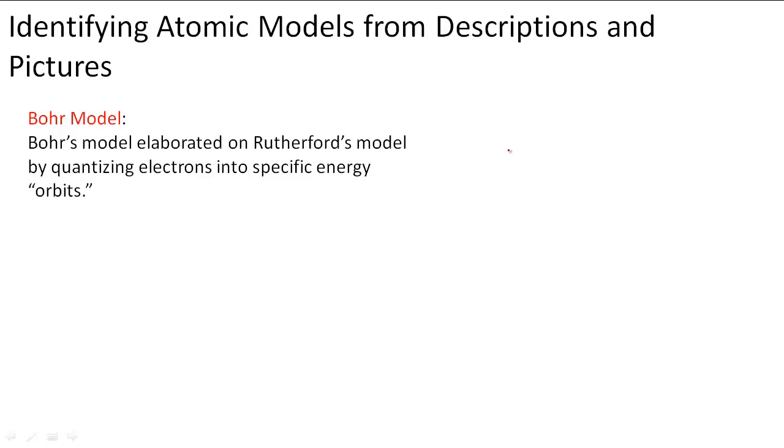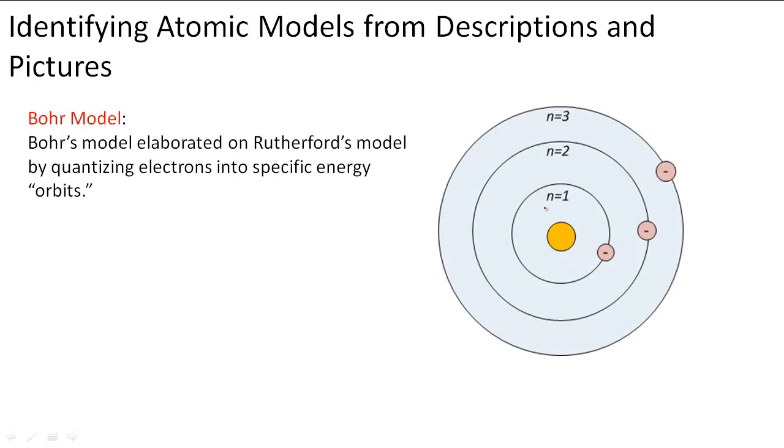Bohr's model elaborated on Rutherford's model by quantizing electrons into specific energy orbits. We've probably heard of electron energy levels before. So here, what he did was he talked about excited and ground states to understand why different elements that have different numbers of electrons have different colors and different spectra, using other people's theories, Einstein and a person named Planck's theories, to understand excited energy states and ground states of electrons based on the orbital energy levels.